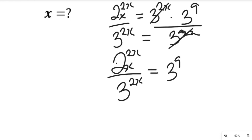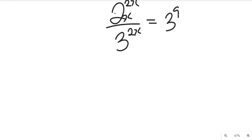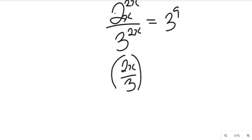To simplify the left hand side further, since both terms have 2x as the exponent, we can write 2x divided by 3 raised to the power of 2x, and this will be equal to 3 to the power of 9.